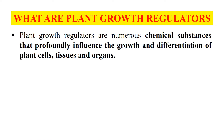First of all, we should know what plant growth regulators are. As the name indicates, they regulate the growth of plants. These are certain chemicals — or you can say hormones — which influence the growth and differentiation of plant cells, their tissues and organs. These chemicals either inhibit or increase the growth of plant cells. Earlier they were also called phytohormones or plant hormones.